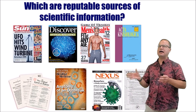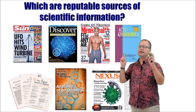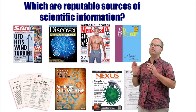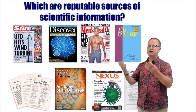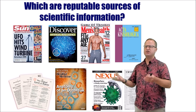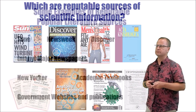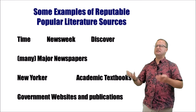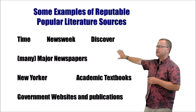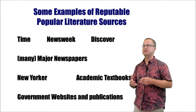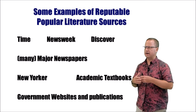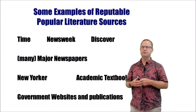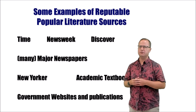As an activity in class or online, I'll have you look at about a dozen different publications and figure out which are reputable sources of scientific information and which are not. Examples of reputable popular literature include Time, Newsweek, and Discover. Most major newspapers are also good sources, as the Associated Press does a very good job covering science. Government websites and academic textbooks are generally solid sources as well.